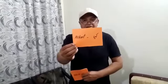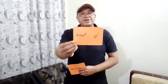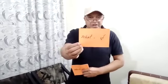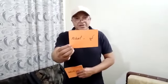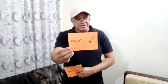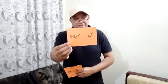Number one: What? — Kya? What is your name? Aapka naam kya hai? What do you do? Aap kya karte hai? What is your age? Aapki umar kya hai? What is in your hand? Aapki haath mein kya hai? What are you watching? Aap kya dekh rahe hai?